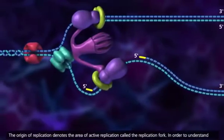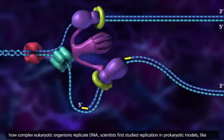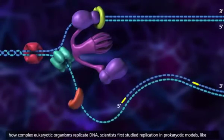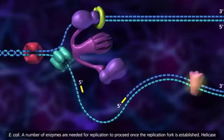In order to understand how complex eukaryotic organisms replicate DNA, scientists first studied replication in prokaryotic models like E. coli.